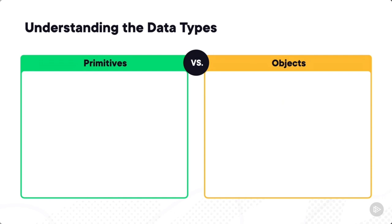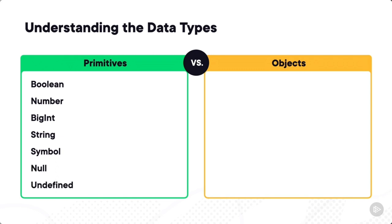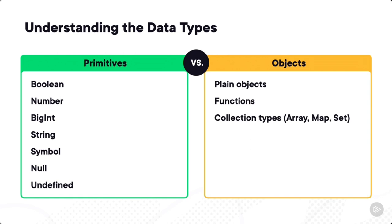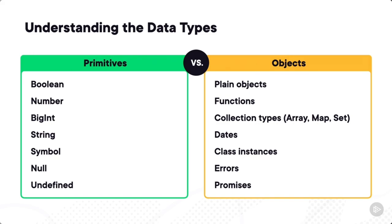Everything else in JavaScript is an object — that includes plain objects, functions, collection types like array, map, and set, dates, class instances, errors, and promises. It's important to note that all primitive types except null and undefined have their corresponding object wrapper types, which provide useful methods for working with primitive values. Even though I said primitives have no methods or properties, JavaScript has utilities that, at runtime, substitute in these wrapper methods so you can interact with that data type more easily.